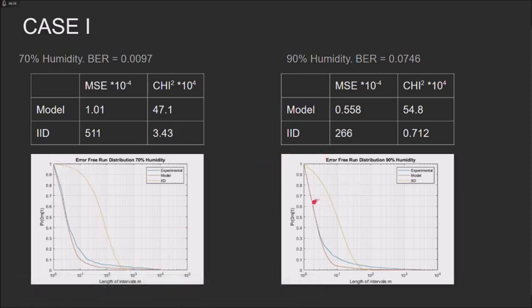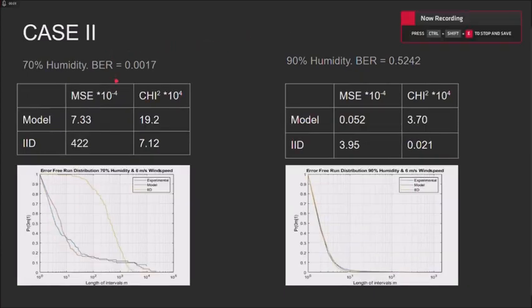Observing the second curve, we can see that the error between the model and the statistical model is much lower. This shows that there is less memory within the channel.